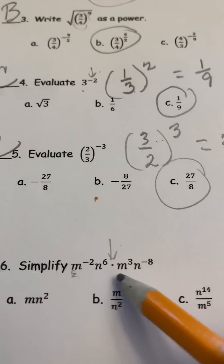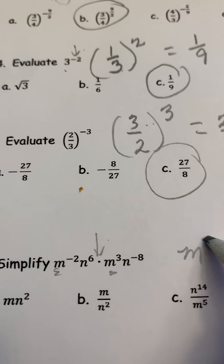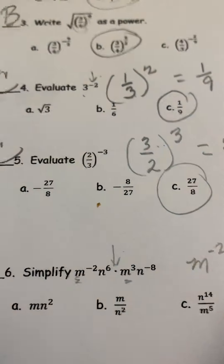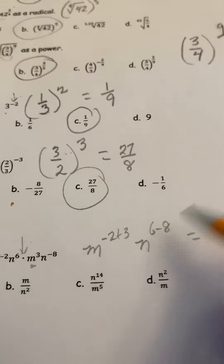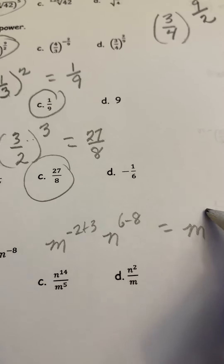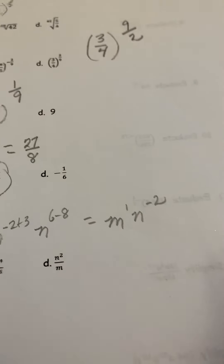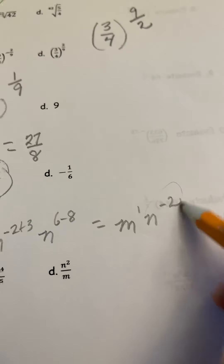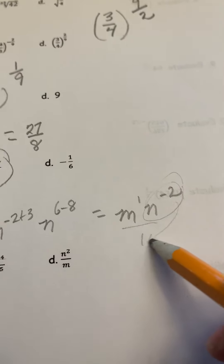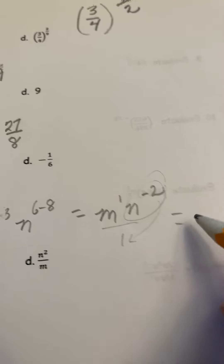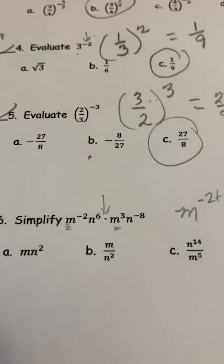Now simplify. Remember the dot means multiply. When we're multiplying bases that are the same, we add the exponents. So M to the negative 2 plus 3, and N to the 6 minus 8. We get M to the 1 — which we don't usually write — and N to the negative 2. Since we can't have negative exponents, we move it to the denominator, giving us M over N squared. That's answer B.